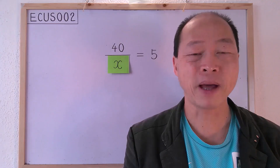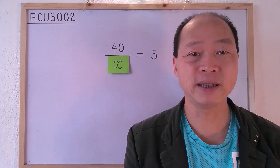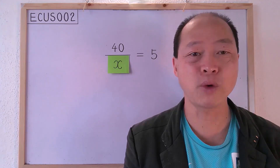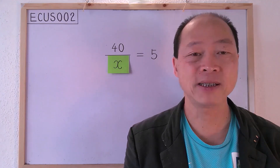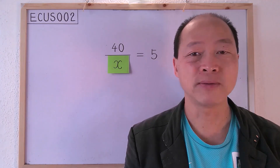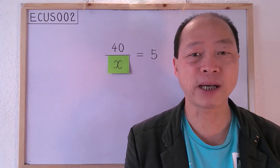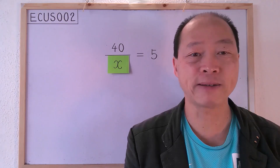Hi everyone, I'm Matthew Wilman. In this video, we discuss how we can work out the value of x in this equation: 40 divided by x equals 5.